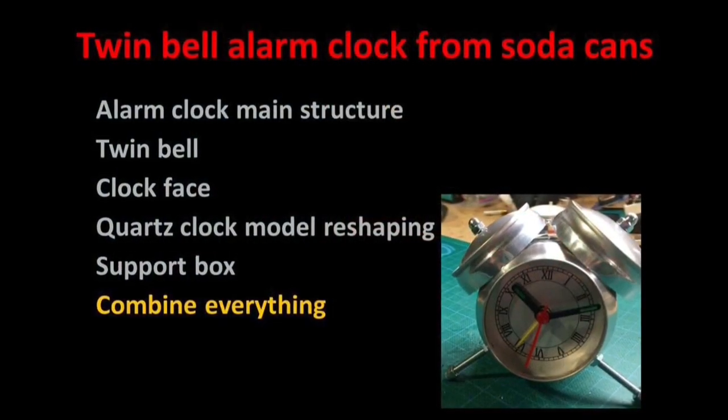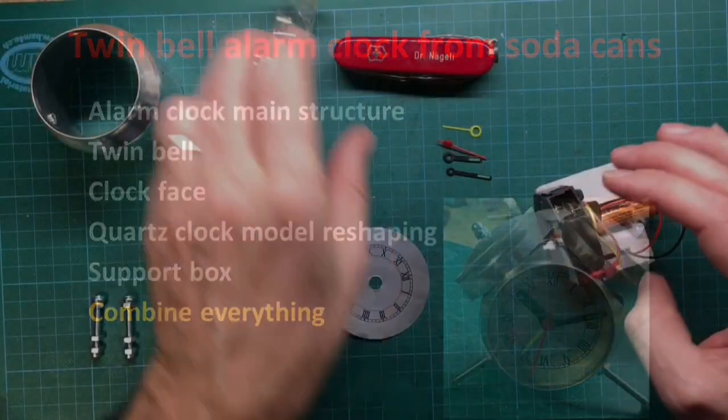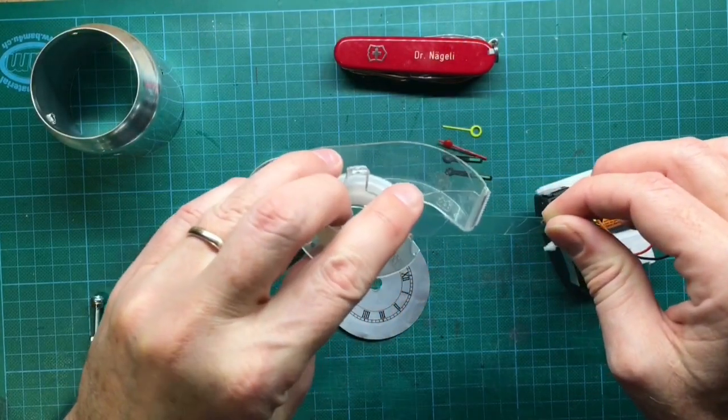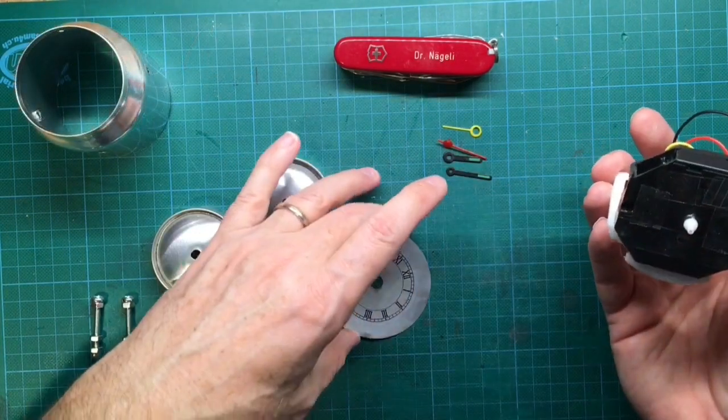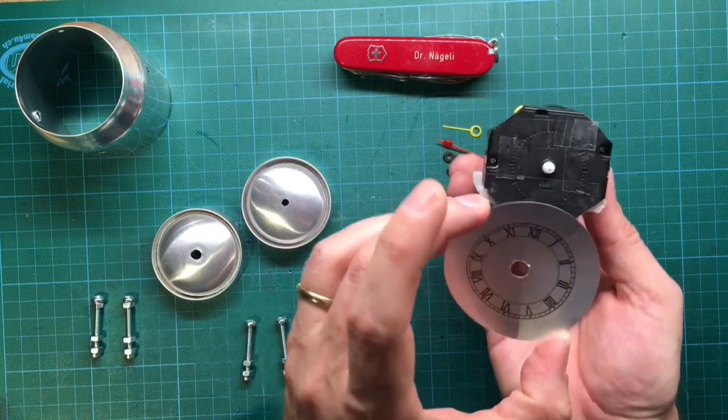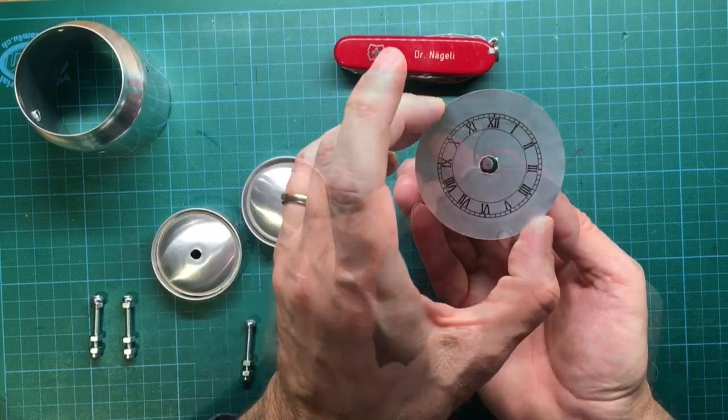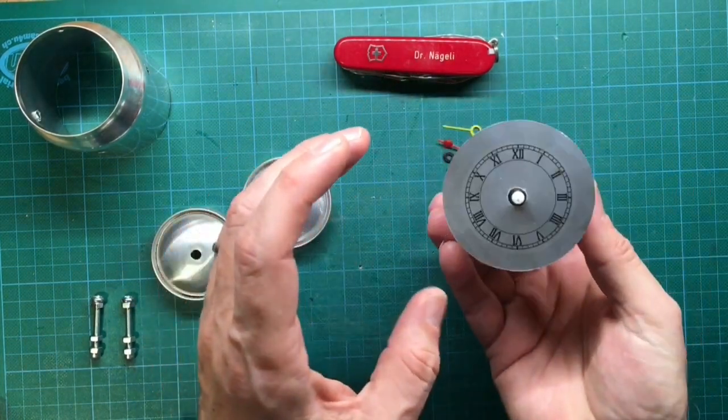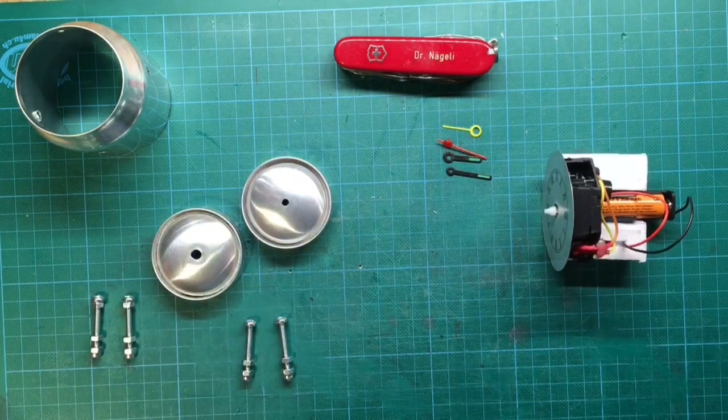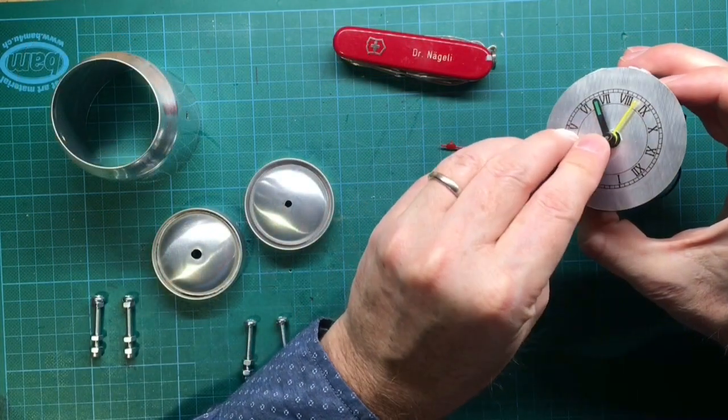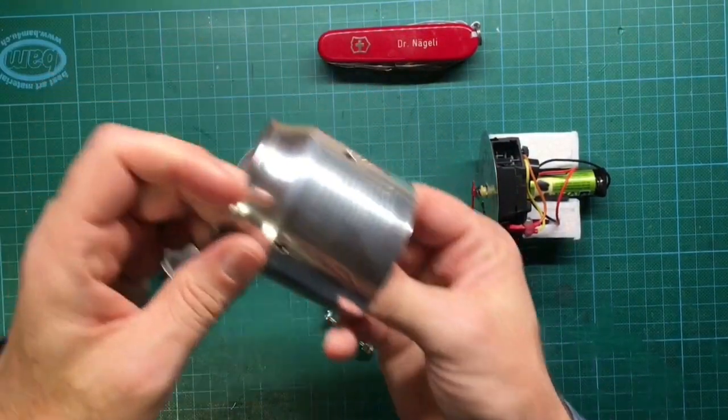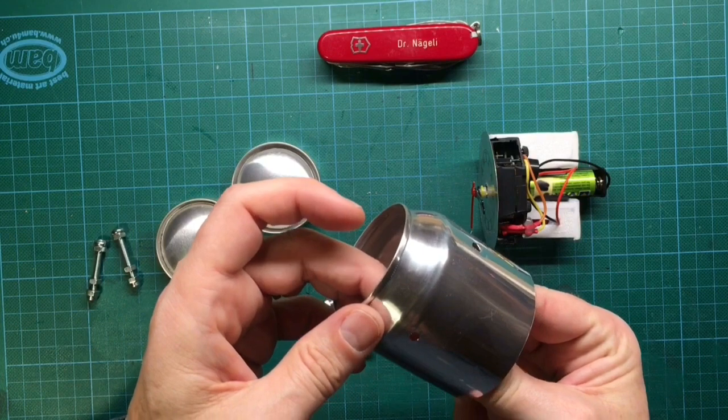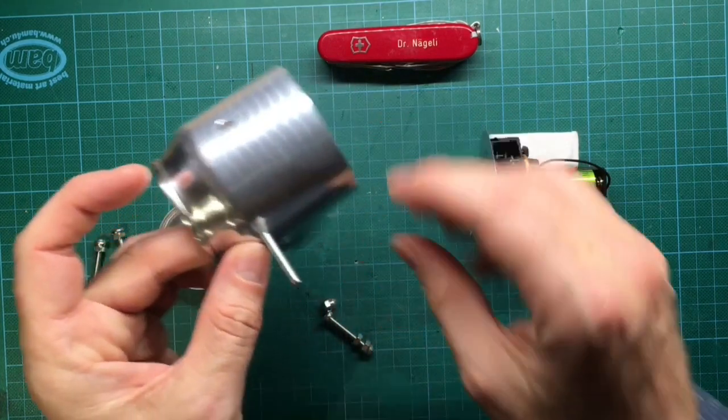Finally we come to the end of the project where we combine all the components we have prepared so far. Fix the clock face to the front side with double sided adhesive tape. Then fix again the clock hands to the quartz clock module. Adjust the hour hand and the minute hand by testing if you hear the alarm at the correct time.